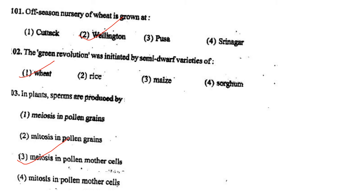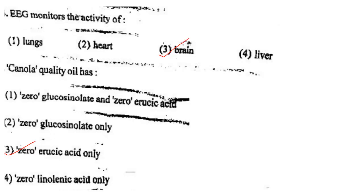Next one: In plants, sperms are produced by option 1, meiosis in pollen grains; option 2, mitosis in pollen grains; option 3, meiosis in pollen mother cells; option 4, mitosis in pollen mother cells. Answer is option 3: meiosis in pollen mother cells.